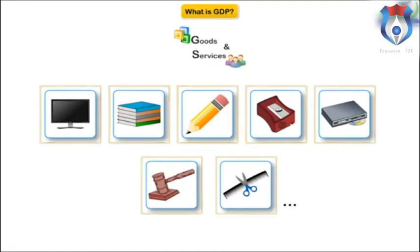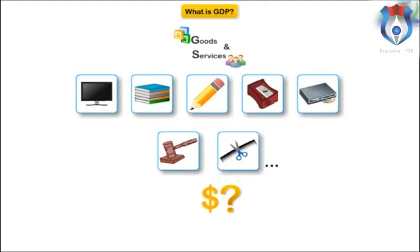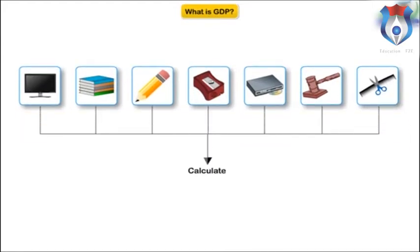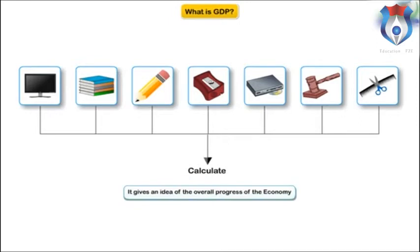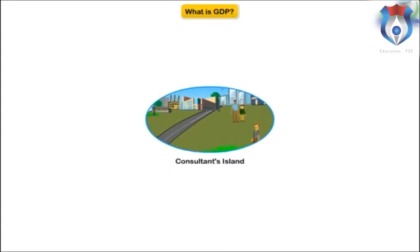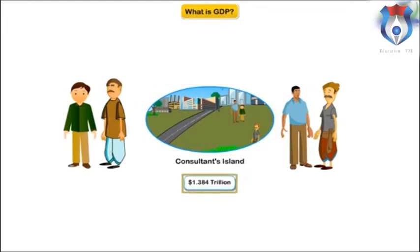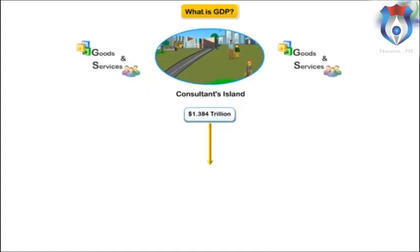What is the total dollar value of all those goods and services? It's a massive exercise to calculate, but there is a simple and holistic way to do so, and it gives an idea of the overall progress of the economy. In this example island economy, last year the total was $1.384 trillion — in other words, people living and working in the island produced $1.384 trillion worth of goods and services. That dollar amount is what we call gross domestic product.